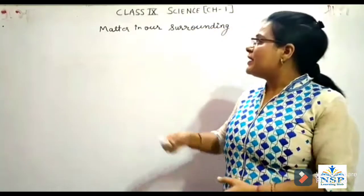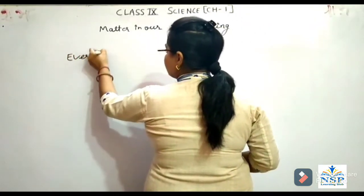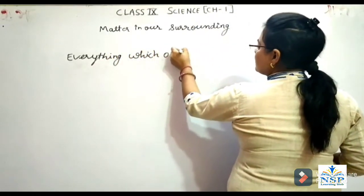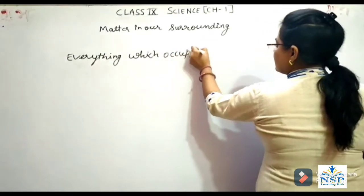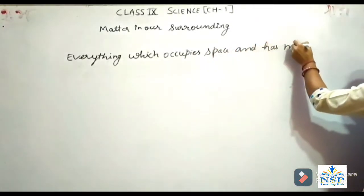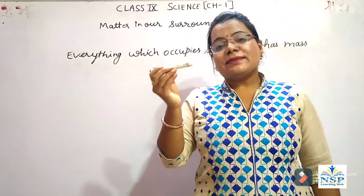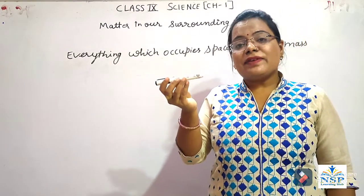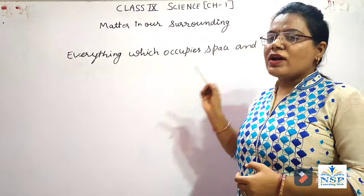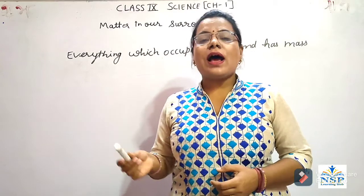So students, first of all we have to know what is matter. Everything which occupies space and has mass is called matter. For example, this marker also has a mass as well as it occupies space in this room. It means everything we see around us is a matter. For example, animals, plants, air, water, etc., all are matter.